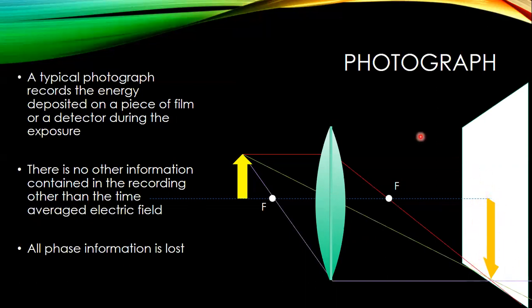Now, we lose a lot of the information. Basically, what we're doing is only recording the time-average electric field — recording the intensity as a function of position in two dimensions. Quite a bit of information is lost. Most importantly, the phase information is lost from the original object.